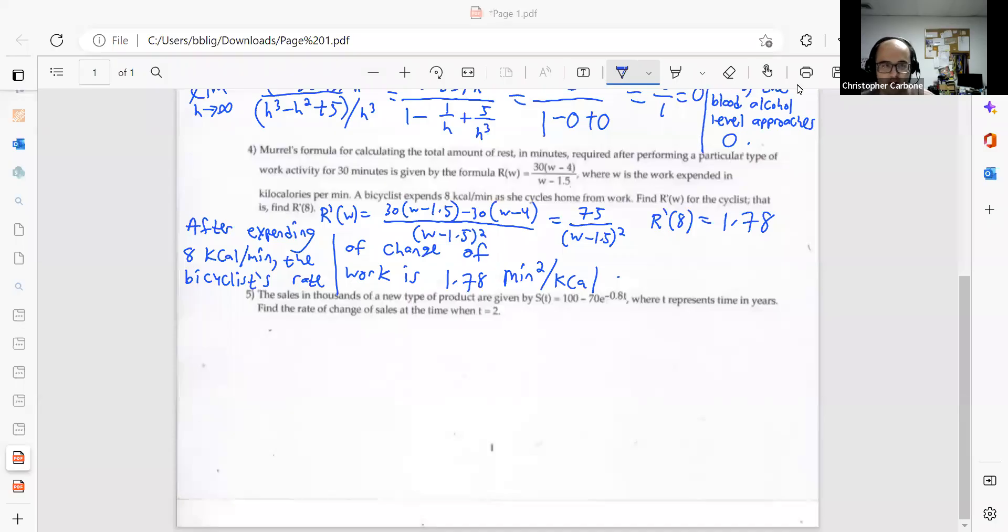For question number 5 of our final exam review with the short answer problems, I have number 5. The sales in thousands of a new type of product are given by S of t is equal to 100 minus 70 times e to the negative 0.8t, where t represents time in years. We want the rate of change of sales at the time when t is equal to 2.